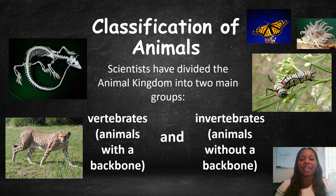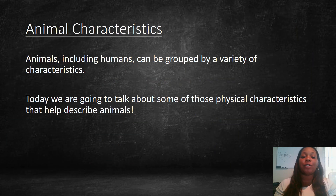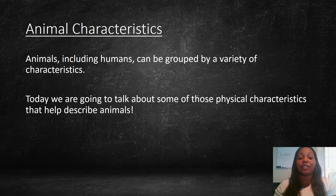Classification of animals. Scientists have divided the animal kingdom into two groups: vertebrates, which are animals with a backbone, and invertebrates, which are animals without a backbone. When we think of grouping animals, we want to group them by their characteristics. Animals, including humans, can be grouped by a variety of physical characteristics.